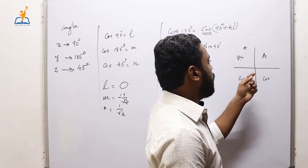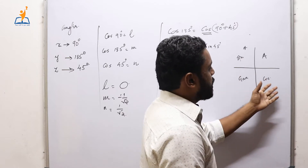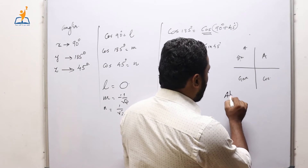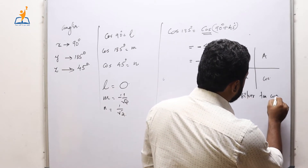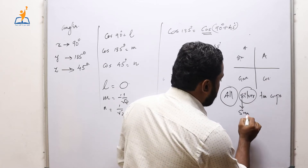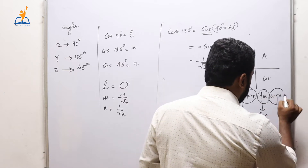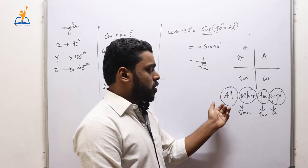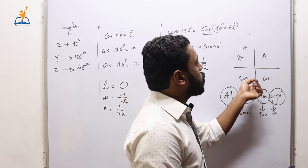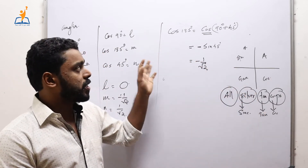In the first quadrant all ratios are positive, in the second quadrant sine and cosec are positive, in the third quadrant tan and cot are positive, and in the fourth quadrant cos and sec are positive. To remember this, use the code 'All Silver Tea Cups': first quadrant All positive, second quadrant Silver for Sine, third quadrant Tea for Tan, fourth quadrant Cups for Cos. So the answer for question one is L=0, M=−1/√2, N=1/√2.